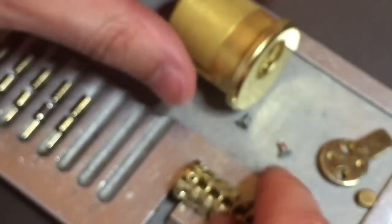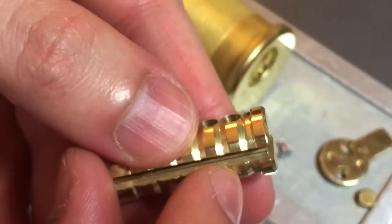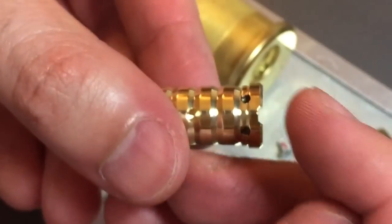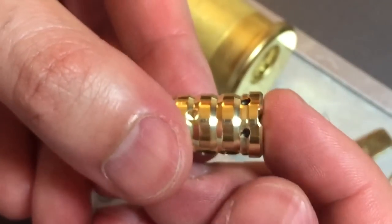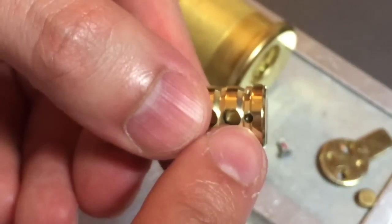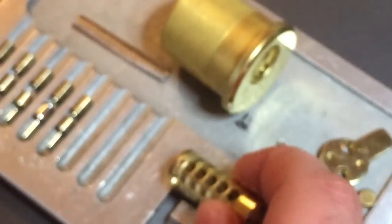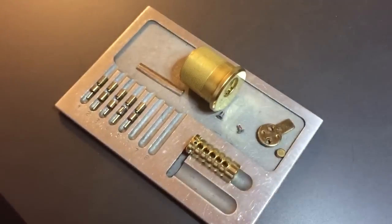And then with the core you can see above and below the keyway there's hardened inserts, and then another right on the front protecting the key pins. So a lot of drill protection there.